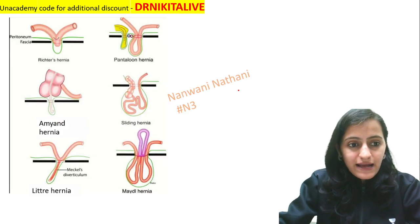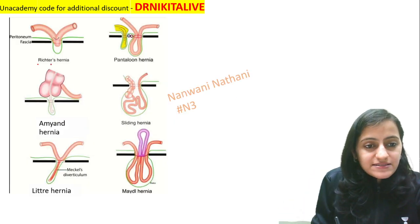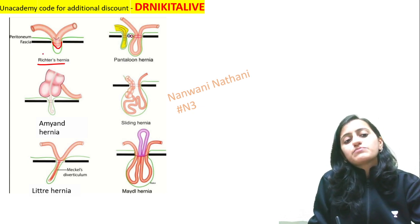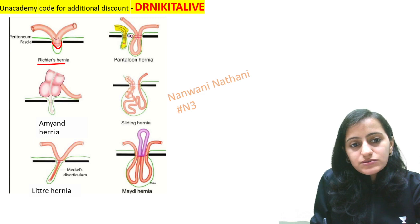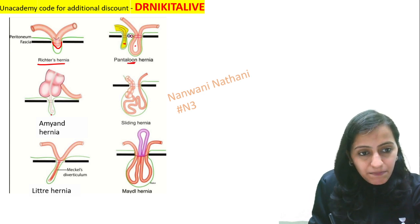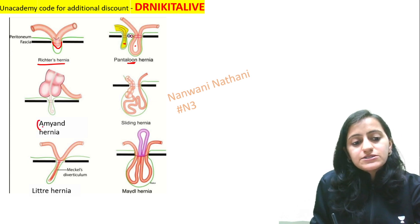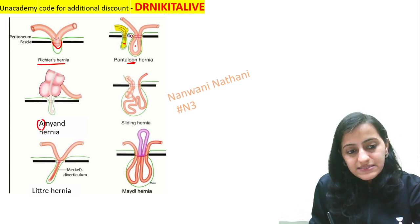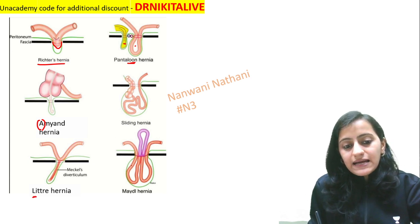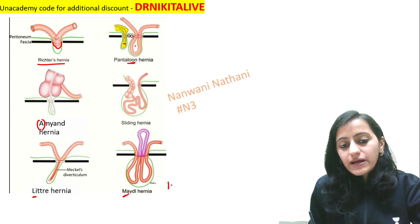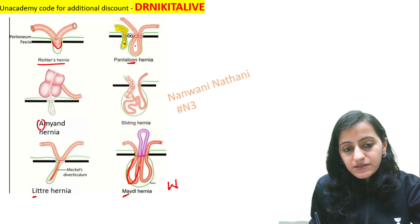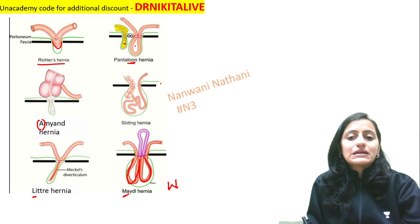Looking at the images: this is Richter's hernia — only a part of the circumference of the bowel has gone through. Pantaloon hernia has two sacs. Here is the appendix going into the hernia, so this is Amyand's hernia. This is Meckel's diverticulum — Meckel's in a little child means it is Littré's. And Maydl's — take the M and reverse it, that gives you W. Maydl's is a W-shaped hernia, as we can see here. That is Maydl's hernia.